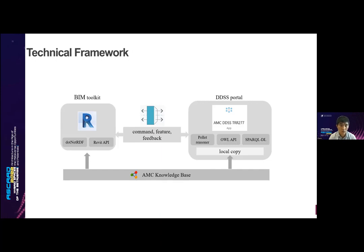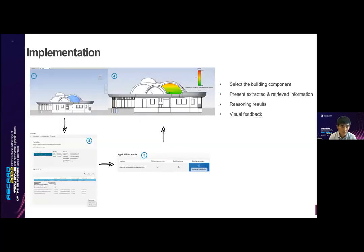The illustrated technology framework presents four major components: the AMC knowledge base, the toolkit on the BIM authoring tool, remote procedural core, and the portal of the design decision support system, where the Pellet reasoner is embedded for inference capabilities. Accordingly, we established the prototype. The architects can select the building components, and then the system extracts the manufacturing features and semantics, presenting them on the design decision support portal. The architect then evaluates the building components' material, building spaces, and geometric conformities regarding the individual AMC methods. Applicability is then informed and architects can visualize it back in the BIM authoring tool.